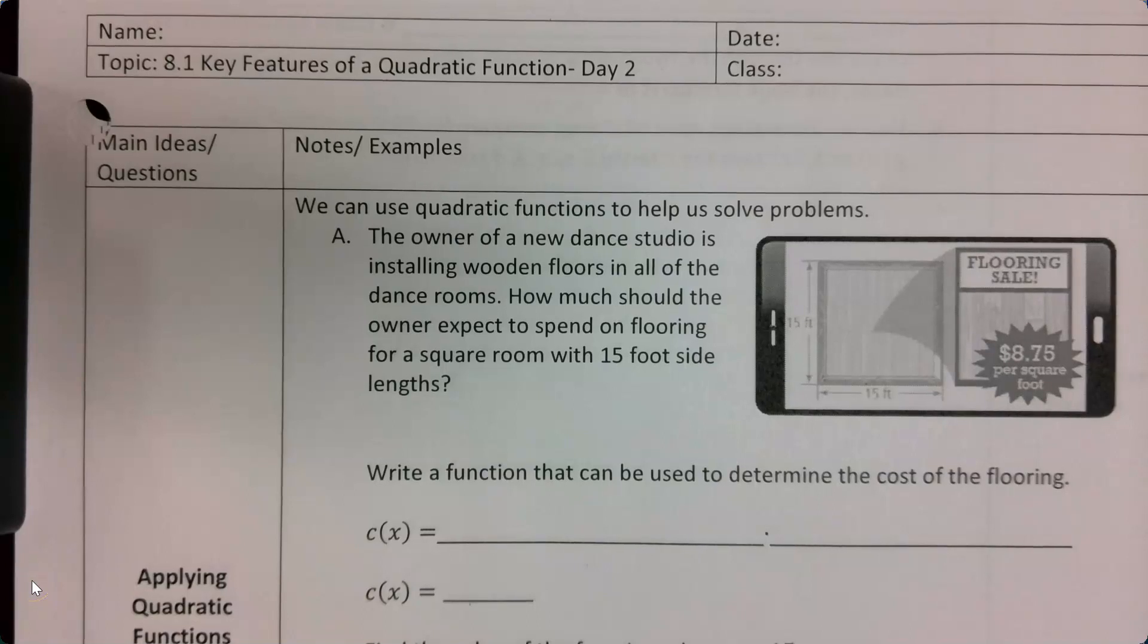Okay, so today we are still talking about key features of a quadratic function so we can use it to help us solve problems. This one says the owner of a new dance studio is installing wooden floors in all of the dance rooms. How much should the owner expect to spend on flooring for a square room with 15 foot side lengths?